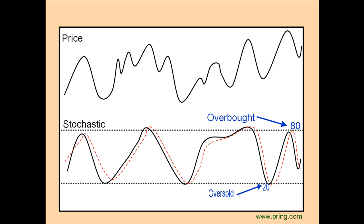There are two parts to the Stochastic: the percent K and a percent D. They are essentially two moving averages. To avoid confusion, think of K as quick, spelt with a K instead of a Q, and D as dawdle. Thus, K is the more sensitive average, and D the smoother of the two.